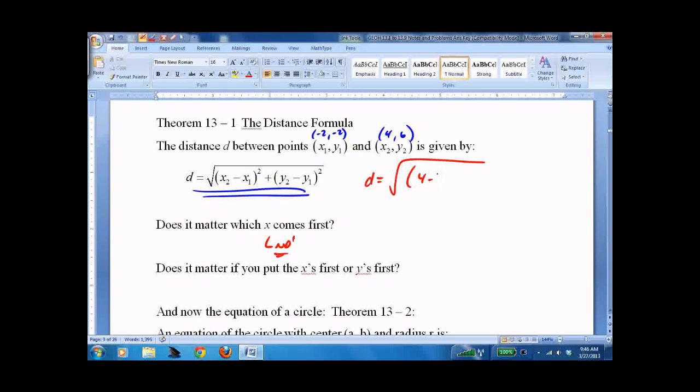4 minus negative 2, squared plus 6 minus negative 2, squared. Distance equals square root of 36 plus 64 equals square root of 100 equals 10.